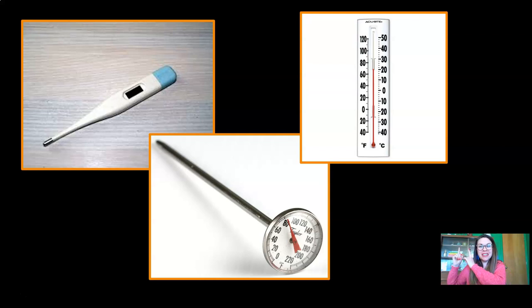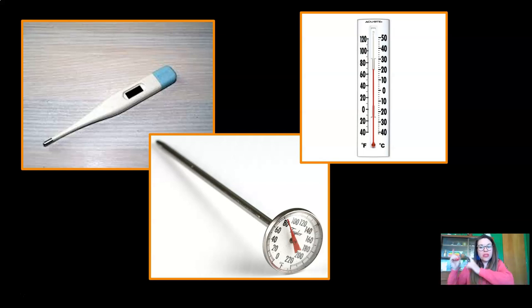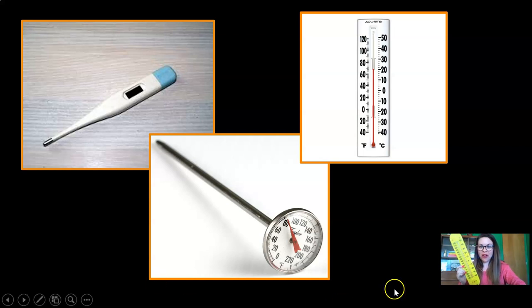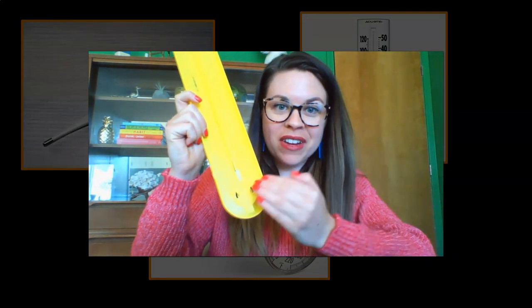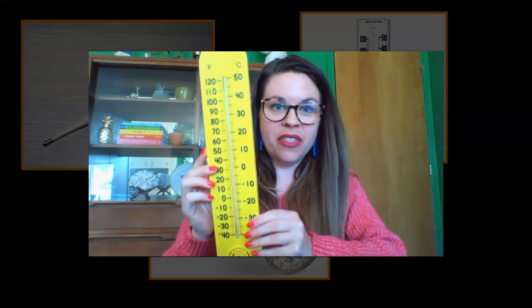Look at this thermometer. Have you ever seen a thermometer that looks like this one? That's a thermometer that measures the temperature of the air around us. So this thermometer might be really helpful for me to figure out what the temperature is. I have my own big thermometer. On the back, there's a part where air can get in, and then the thermometer works by telling me a number that helps me figure out what the temperature is. And that helps me figure out what I should wear.